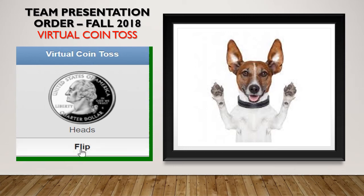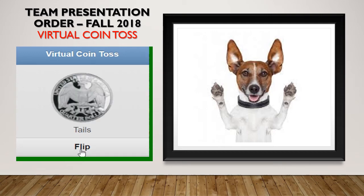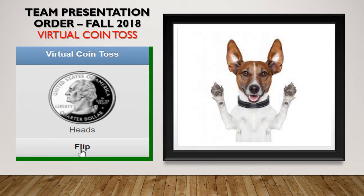So here we go, we're going to flip it and it's heads. The second is tails. The third is tails. The fourth is heads, and now this will determine whether it'll be heads or tails and who's going first or last. Heads. So it looks as if heads will win, and that means that the teams with the highest numbers will go first.